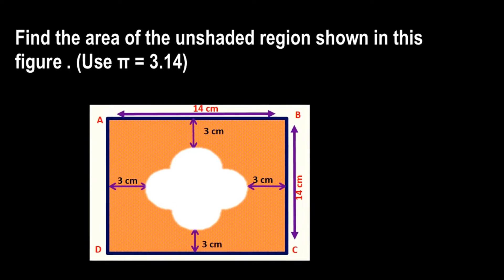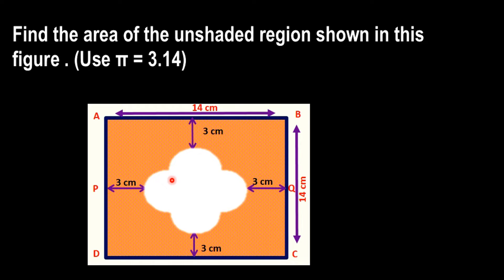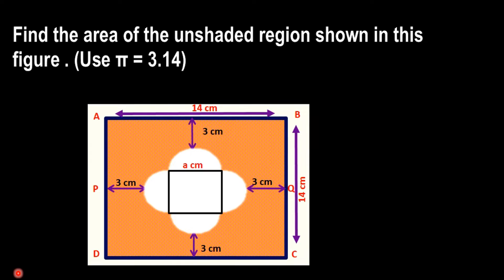Find the area of the unshaded region shown in this figure. We have to find the area of this unshaded region — the white region. We can see that this unshaded region contains a square and four semicircles.